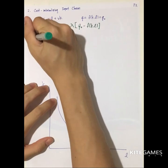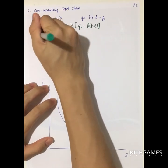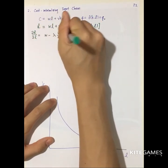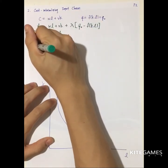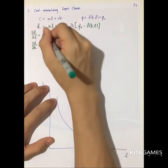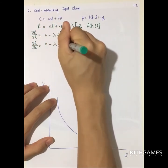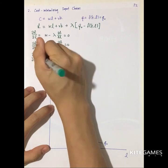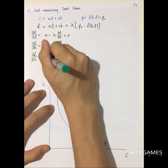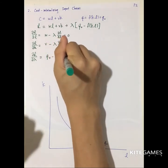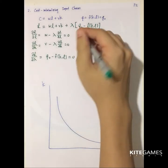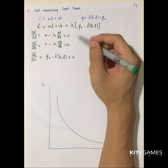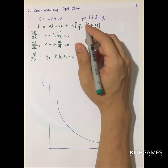We take the partial derivative of the Lagrangian with respect to labor, which gives W minus lambda times partial F partial L, set equal to zero. Then the partial derivative with respect to K gives V minus lambda times partial F partial K, set equal to zero. Finally, the partial derivative with respect to lambda gives Q0 minus F equal to zero. So we have three unknowns and three equations, and we can find the optimal K, L, and output.